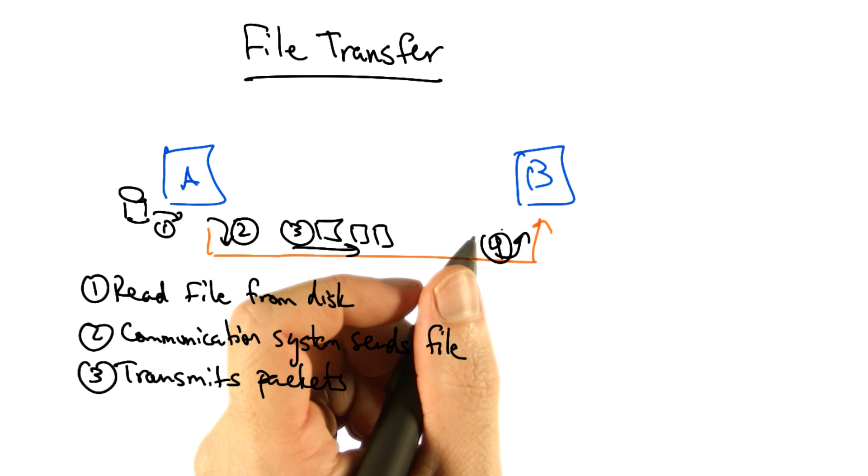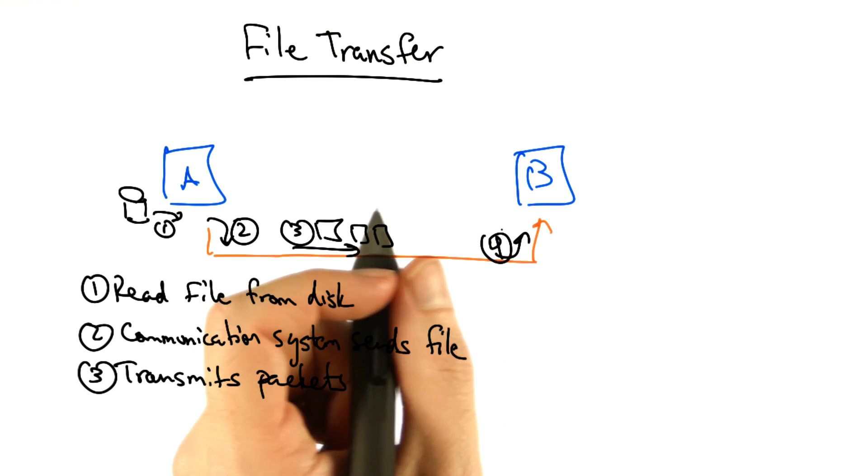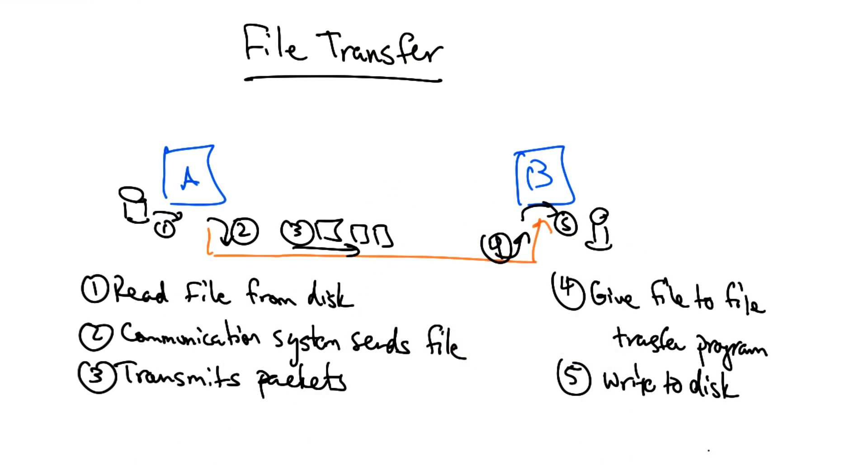On the receiving side, the communication system gives the file to the file transfer program on B, and that file transfer program asks to have the file written to disk.